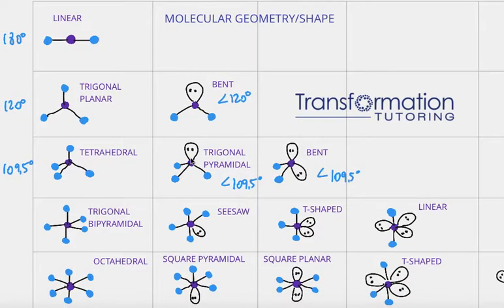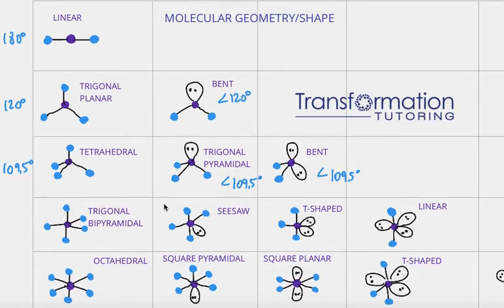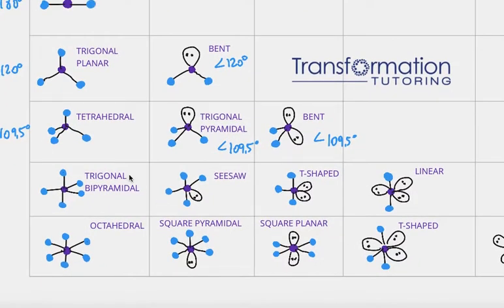I also put some angles here. If your molecule is linear, it will be 180 degrees; trigonal planar will be 120; bent will be less than 120 in this case, and so on. Let's continue looking at shapes. If your central atom is connected to four other atoms, it is tetrahedral.